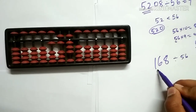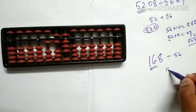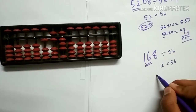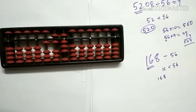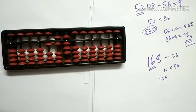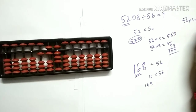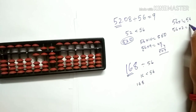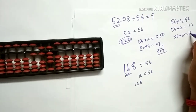Let's check the first 2 digits. Here it is 16. Because 16 is less than 56, we will go for the first 3 digits: 168. Let's check the 56 table for 168 or nearest multiples. 56 into 1 is 56, 56 into 2 is 112, 56 into 3 is 168.